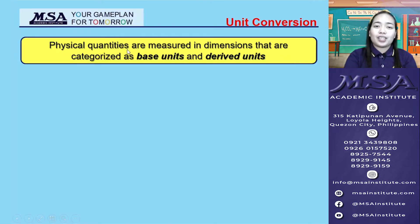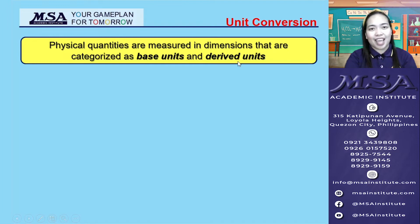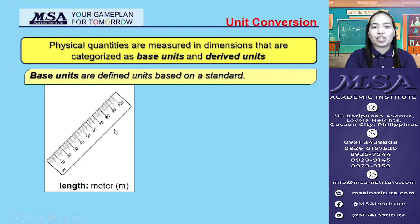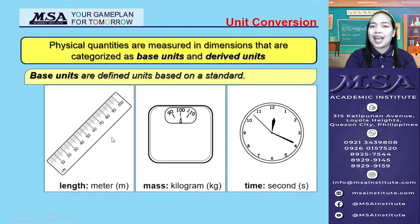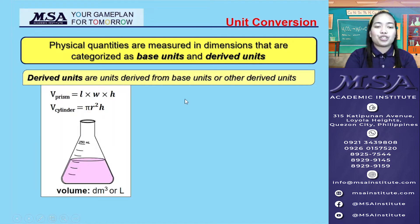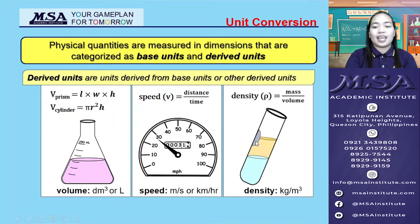Physical quantities are measured in dimensions that are categorized as base units and derived units. Base units are defined units based on a standard such as length, mass, and time. On the other hand, we have the derived units — these are units derived from base units or other derived units such as volume, speed, and density.